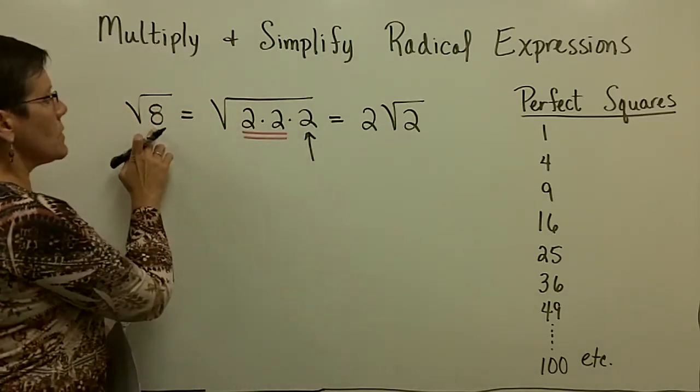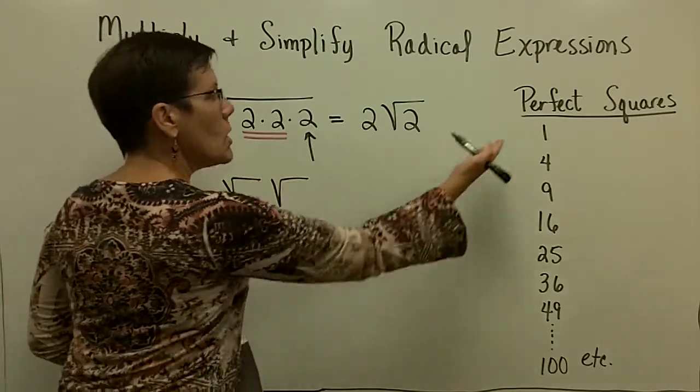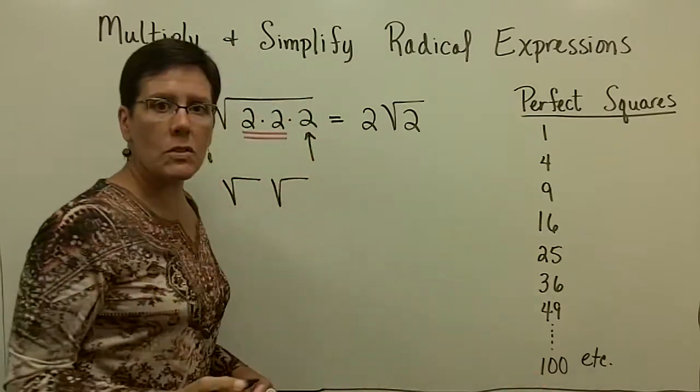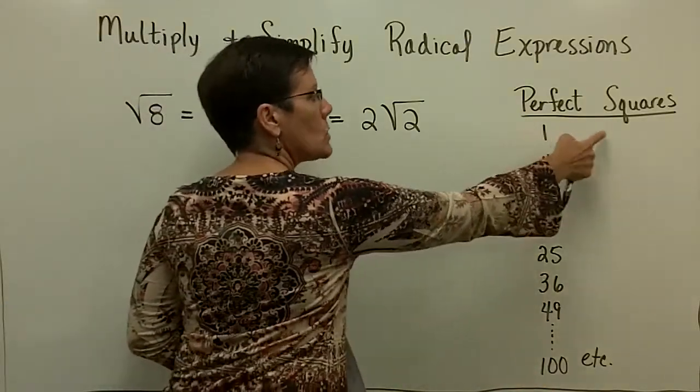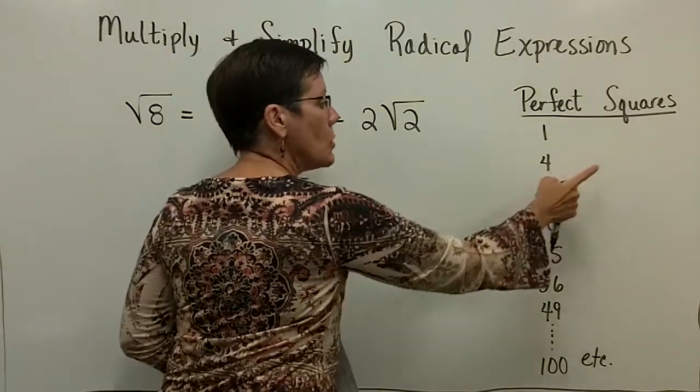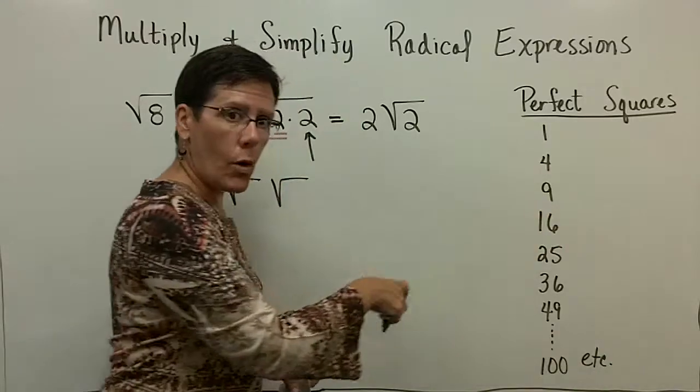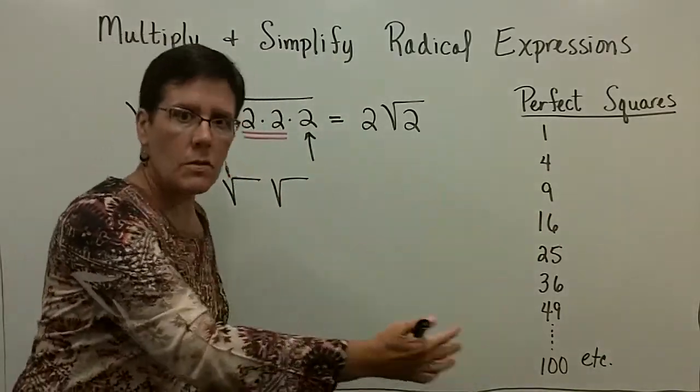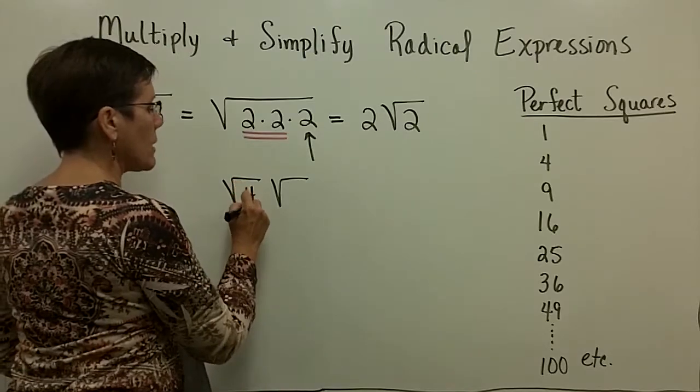Another approach to this is to take 8 and write it as the product of 2 integers, where one of them is from this list of perfect squares, because I know that all of these I can take the square root of. The square root of 1 is 1. The square root of 4 is 2. The square root of 9 is 3. The square root of 16 is 4, and 5, and 6, etc. So if I can think of 8 as the product of 2 numbers, in this case 4 times 2, where one of them is from this list,